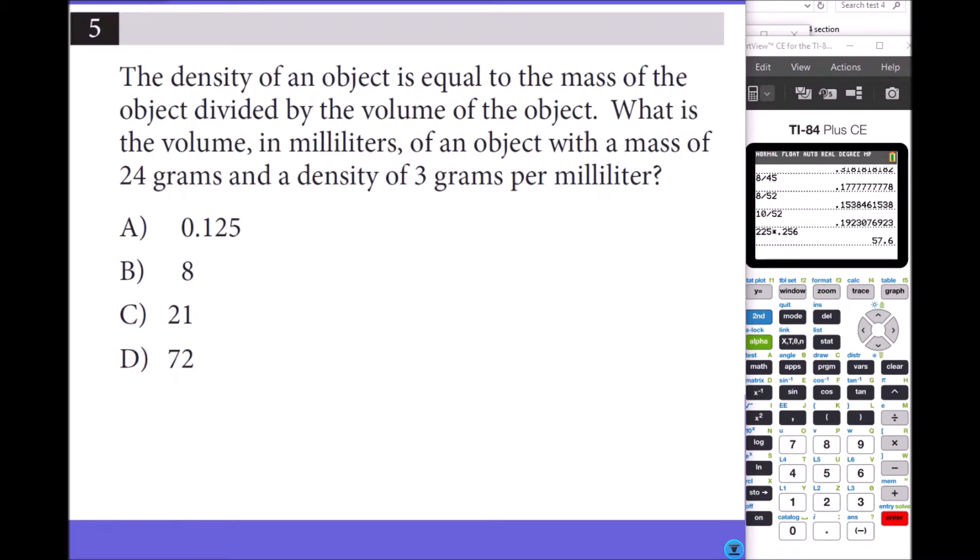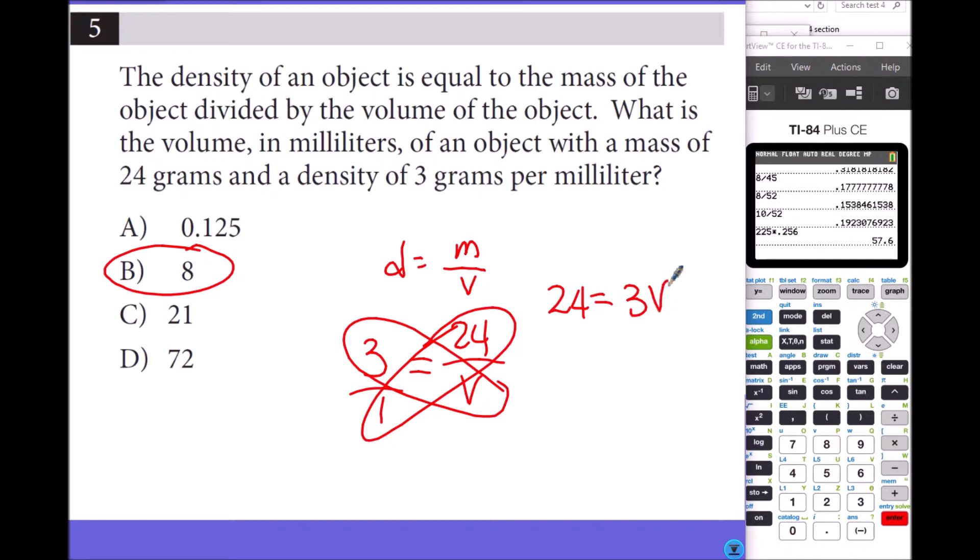Number 5: The density of an object is equal to the mass of the object divided by volume. So density equals mass divided by volume. What is the volume in milliliters of an object with a mass of 24 grams and a density of 3 grams per milliliter? To make 24 become 3, you have to divide by 8. If I show you how to do this, you can cross multiply: 24 equals 3 times V. Divide by 3 on both sides, so V equals 8.